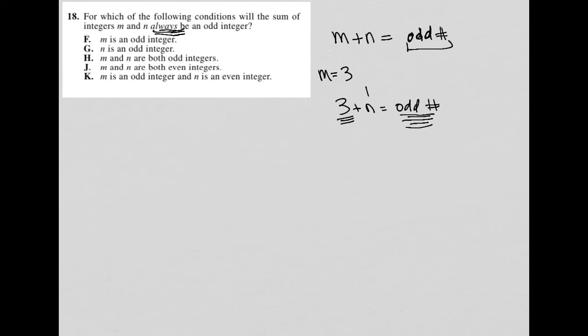Because if n is 1, it's not odd. If n is 3, it's not odd, right? If n is 5, it's not odd. So F is gone, right? M being an odd number is not a condition that makes m plus n always an odd integer.